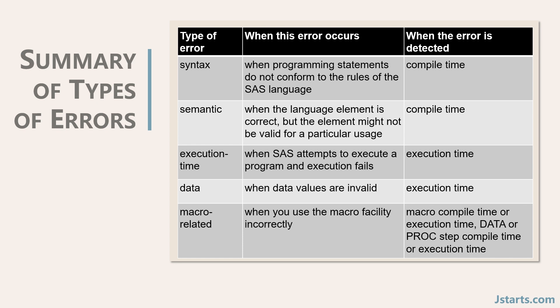Semantic error occurs when the language element is correct, but the element might not be valid for a particular usage. For example, when using a numeric variable name where only a character variable is valid.